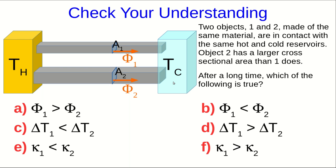So let's now check your understanding. Let's suppose that we have a hot object and a cool object, and we connect them with two different objects, one and two. They're made of the same material. And object two has a larger cross-sectional area. And after a long time, which of these statements about fluxes, temperature differences, and thermal conductivities is true?